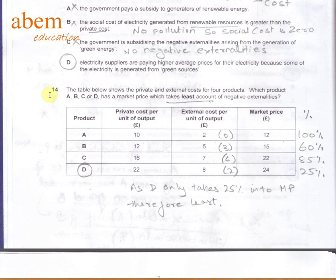In question number 14, it's a mathematical question. It says if the market price is accounting for the external cost or the externalities. In product A, 10 plus 2 equals 12 quid, so 100% of this 2 pounds is accounted for. In product B, 12 plus 5 is 17, but it's 15, so we know that 3 pounds has been accounted for. 3 of 5 is 60 percent. Similarly, 16 plus 7 equals 22, so we know that 6 pounds of 7 pounds is accounted in the market price. 6 over 7 is 85 percent.